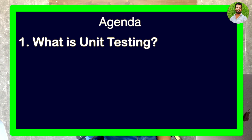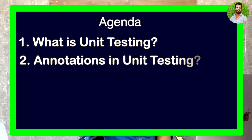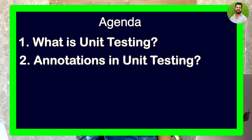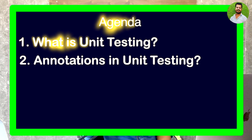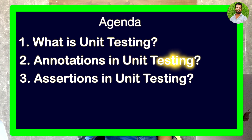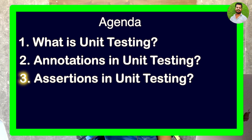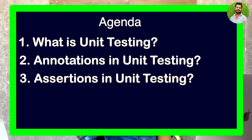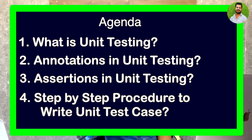Here is the quick agenda. First, we will discuss what unit testing is. Second, we will discuss a few annotations — for example, @Before, @After, @Test, etc. Then we will discuss a few assertions — for example, assertTrue, assertFalse, assertEquals, assertThat, etc. Finally, I will walk you through the step-by-step procedure of implementing unit tests in your Android project.